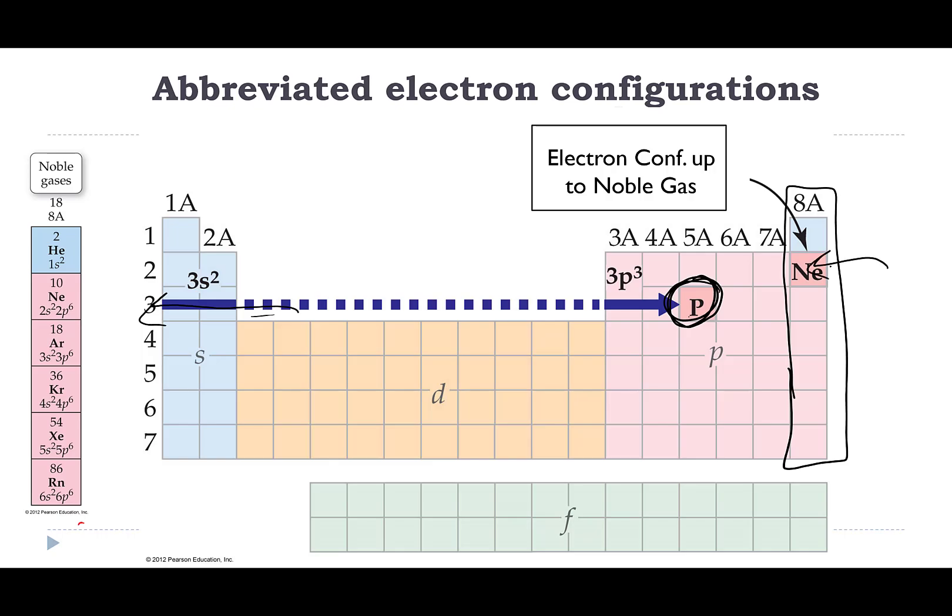So I'm going to go backwards, this way, and the noble gas that's directly behind it is neon. Then I'm going to write that noble gas into brackets - not parentheses, lazy chemists, brackets, we got to square those off.